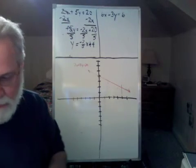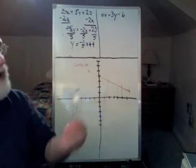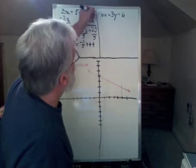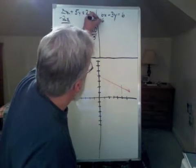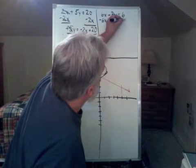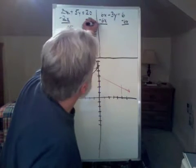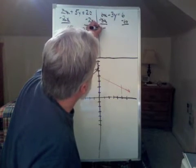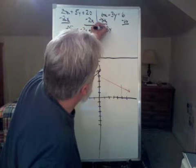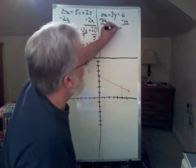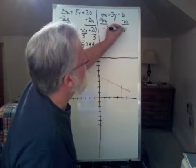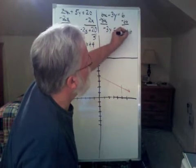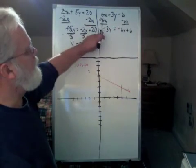We're going to do the same thing with the other line now. And it's good for practice. I'm going to subtract 6x from both sides. Those cancel out. I'm left with minus 3y equals minus 6x plus 6.